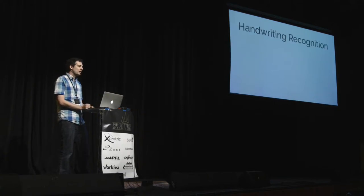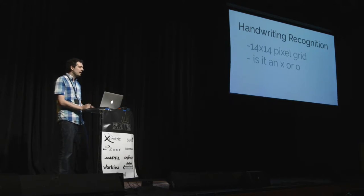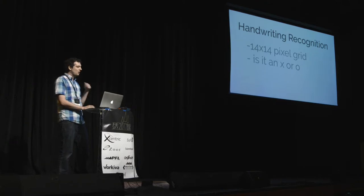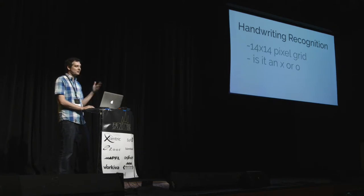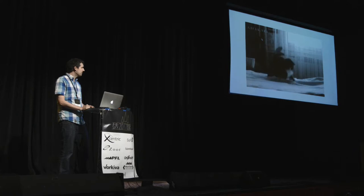Let's do a quick example working from handwriting recognition. If people are drawing characters, we're going to take a 14 by 14 pixel grid as the input to our network. And we're going to try to predict whether they're drawing an X or an O. You'd create training data with, say, a hundred thousand examples of X's labeled as X's, and a hundred thousand examples of O's labeled as O's. The algorithm learns from that, and then when we show it a new picture without the label, it's able to tell us one way or the other, hopefully.